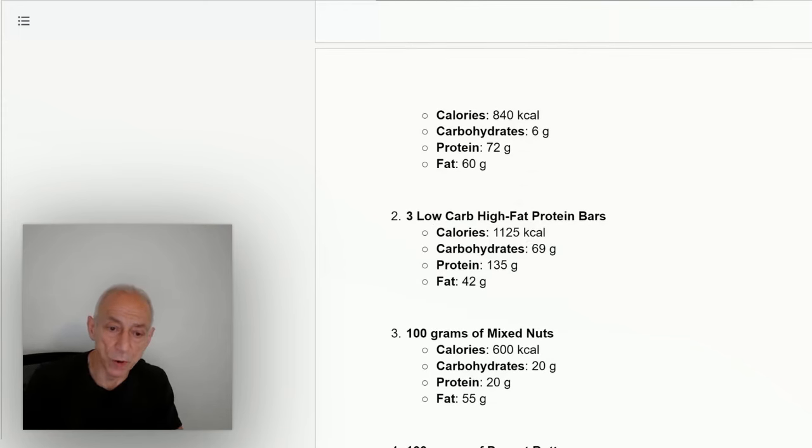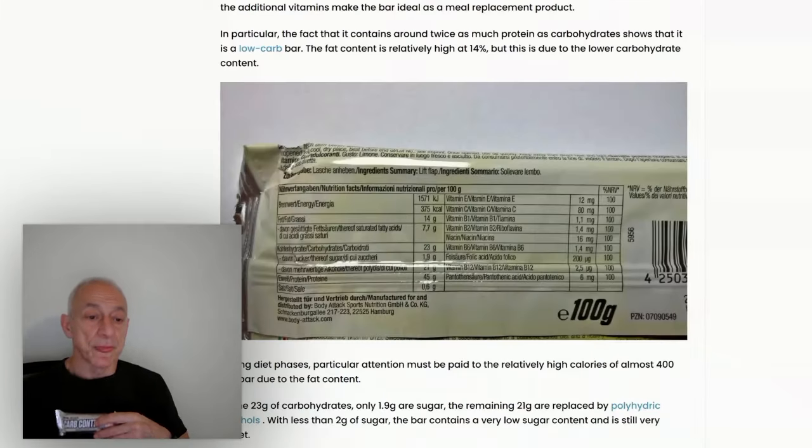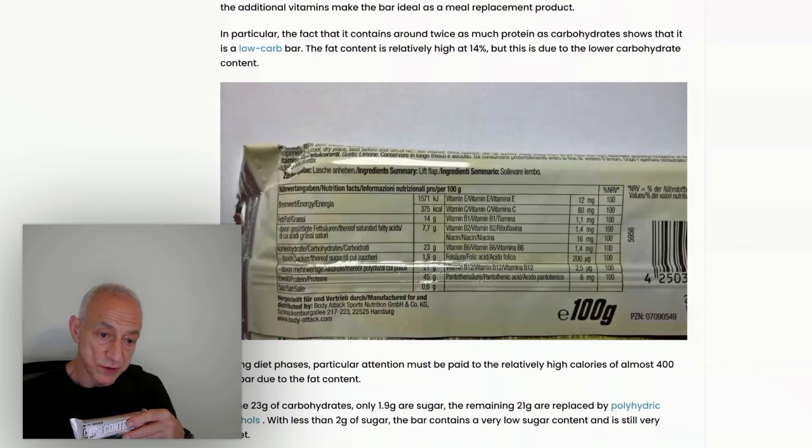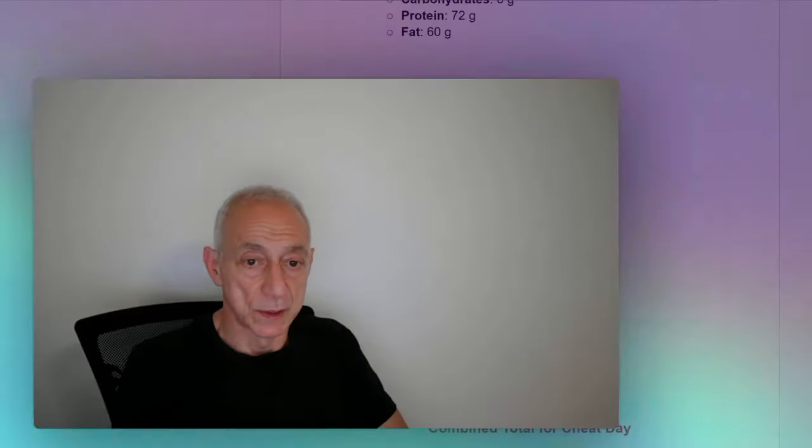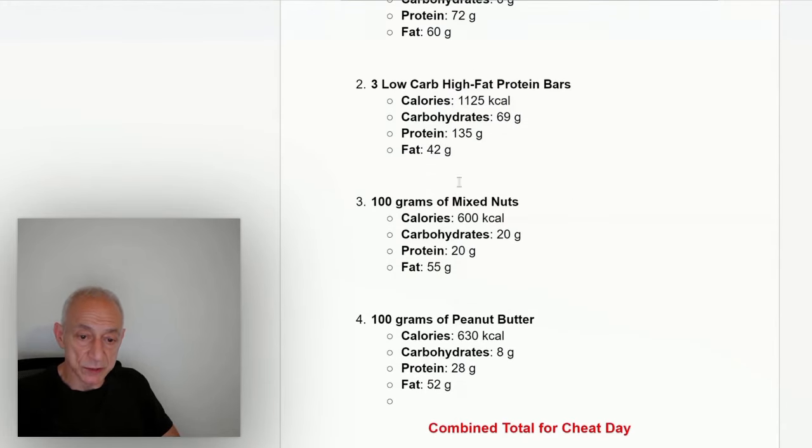I eat what's called low-carb, high-protein bars, which you see right here. Let me share the screen. As you can see on the screen right here, one bar has 375 calories, 14 grams of fat, 7.7 grams of carbohydrates, and the protein, a very high-protein bar, has 45 grams. As I said, I eat 3 of these on my cheat day. Next, I follow up with eating 100 grams of mixed nuts with 600 calories, 20 grams of carbohydrates, 20 grams of protein, and 55 grams of fat.